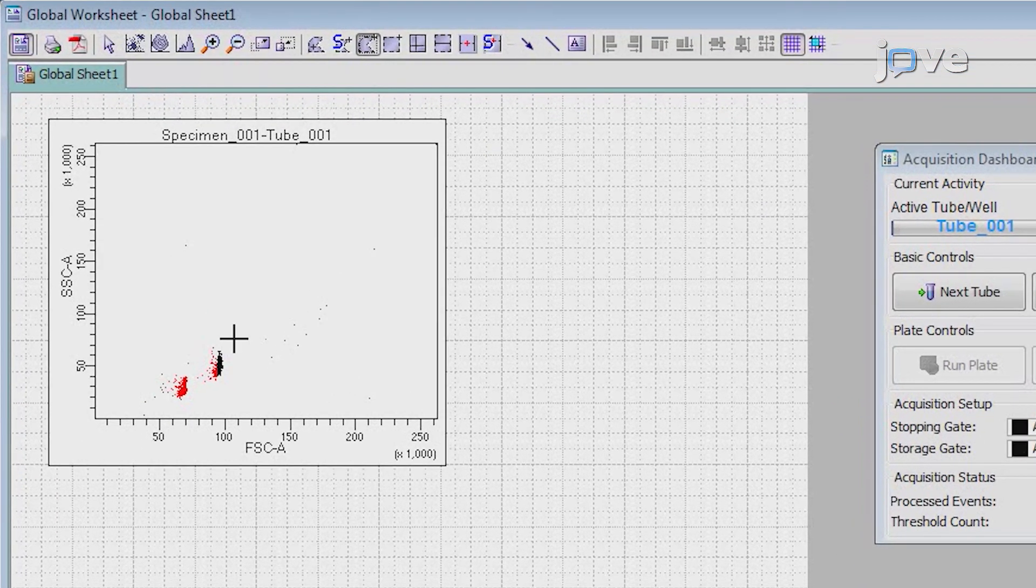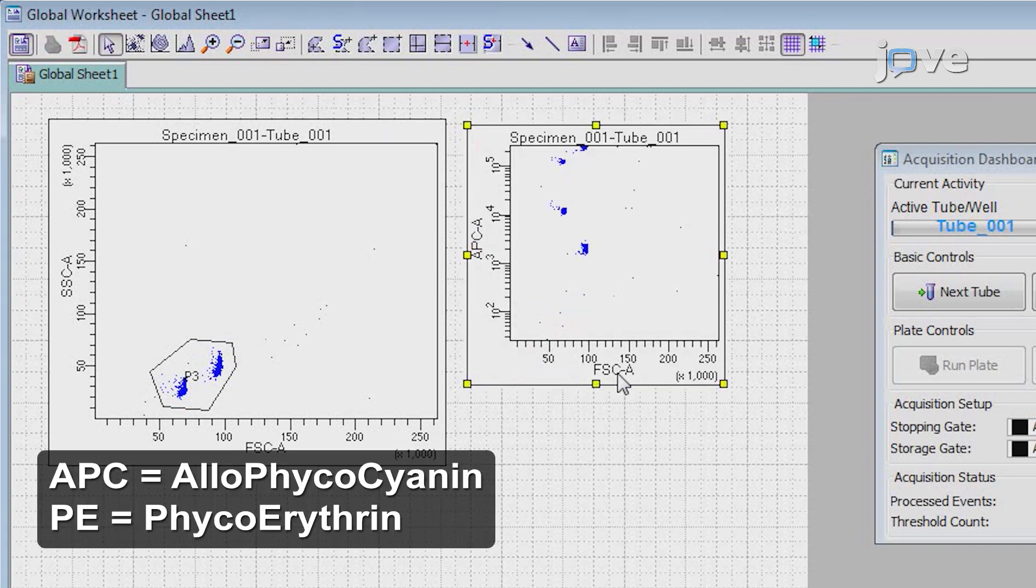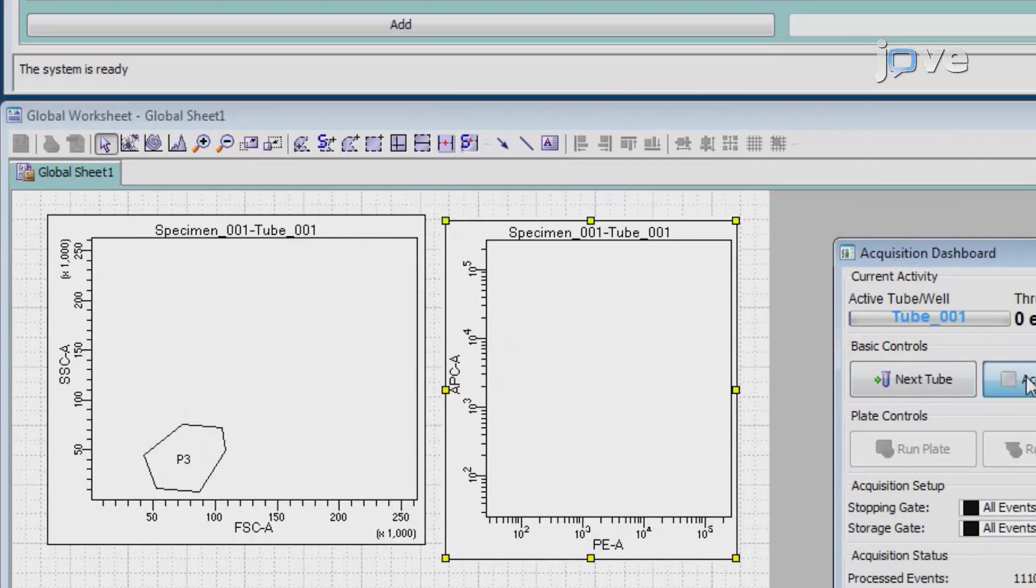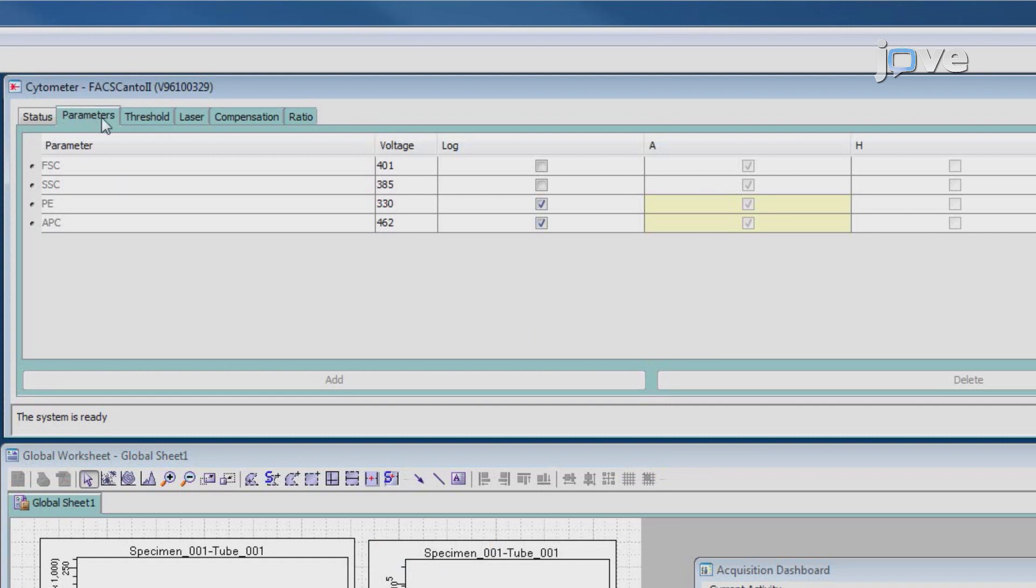In the forward scatter versus side scatter plot, draw a gate that includes all bead populations. Display the gated bead populations from the forward scatter versus side scatter plot on the second dot plot with PE on the x-axis and APC for the y-axis. Adjust the PMT voltage for the APC fluorescence channel so that the APC signal for all bead populations has a median fluorescence intensity, or MFI, that lies between 10 and 5,000.